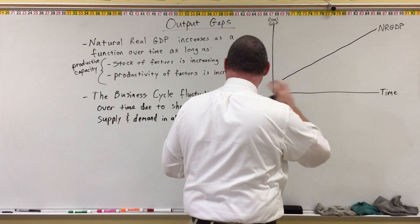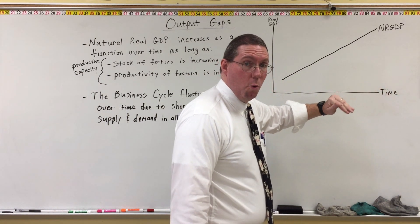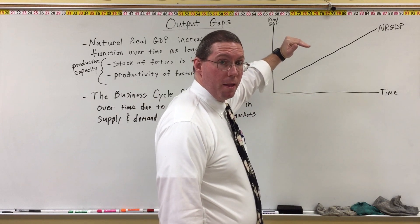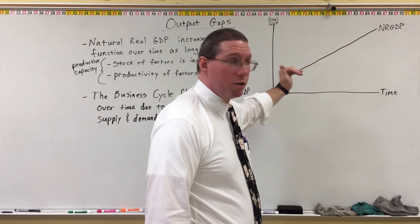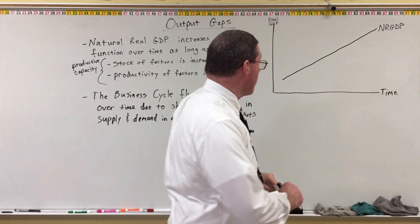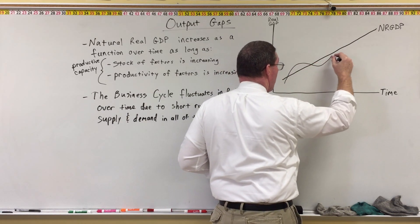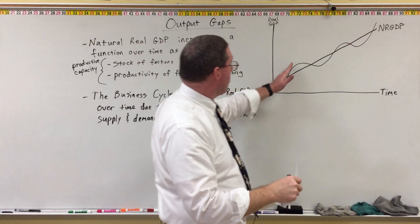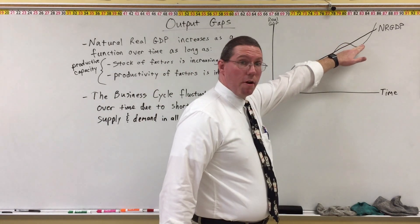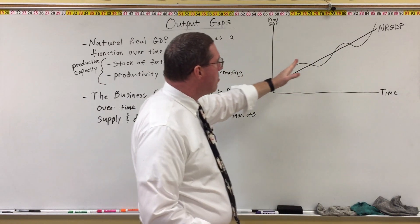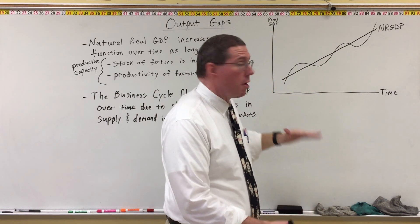If I put the business cycle on the same graph, over time as years pass, sometimes we'll be in an economic expansion and the business cycle will be going up; sometimes we'll be in a contraction and it will be coming down. Between expansions and contractions, we have peaks and troughs. The business cycle straddles natural real GDP — sometimes below it, sometimes above it — as time progresses.